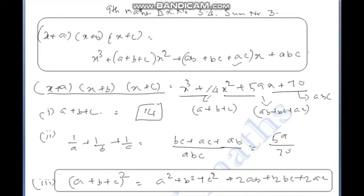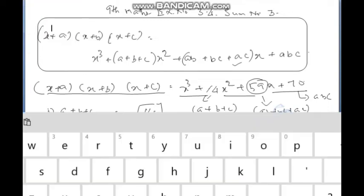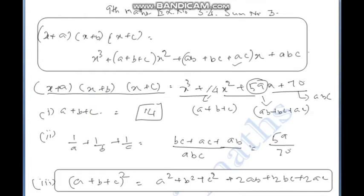You can see x cubed as well. Now, comparing the given polynomial x cubed plus 14x squared plus 59x plus 70 with the expanded identity, let's identify each coefficient value.